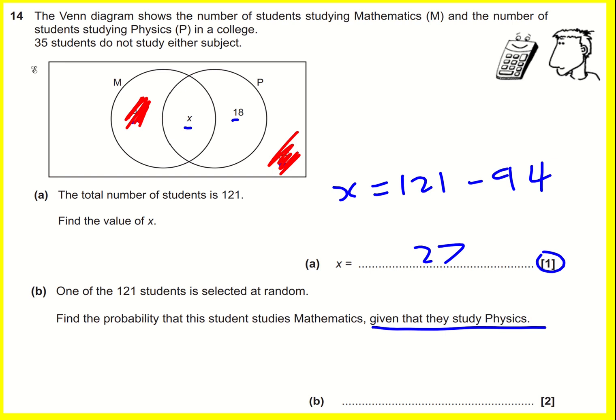Now we know that x is 27, so find the probability that this student studies mathematics. Well, there are 27 people who study mathematics, and how many are there in total? It's going to be 27 plus 18. It's going to be 45.